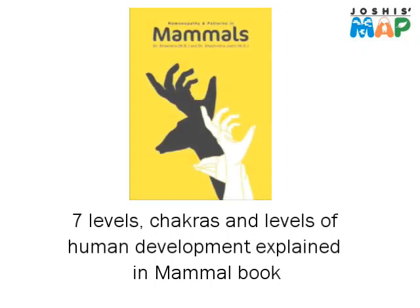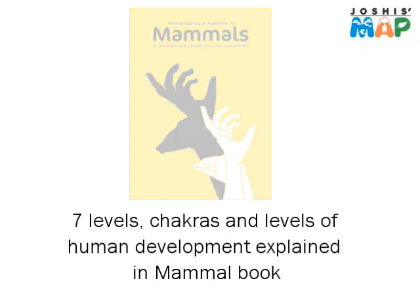Let me briefly tell you what the seven levels are. These seven levels, or the seven rows of the periodic table, can be compared to seven levels of human development — from conception, or from having no boundaries, or from being part of the universe, to differentiating oneself more and more, meaning developing more and more boundaries.